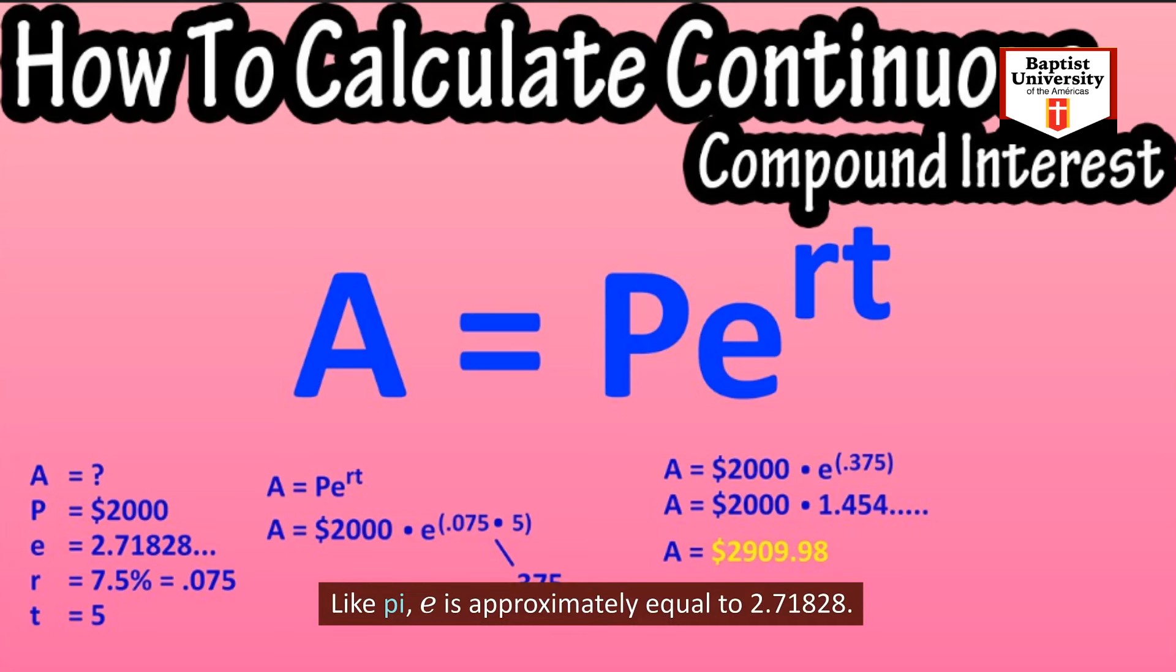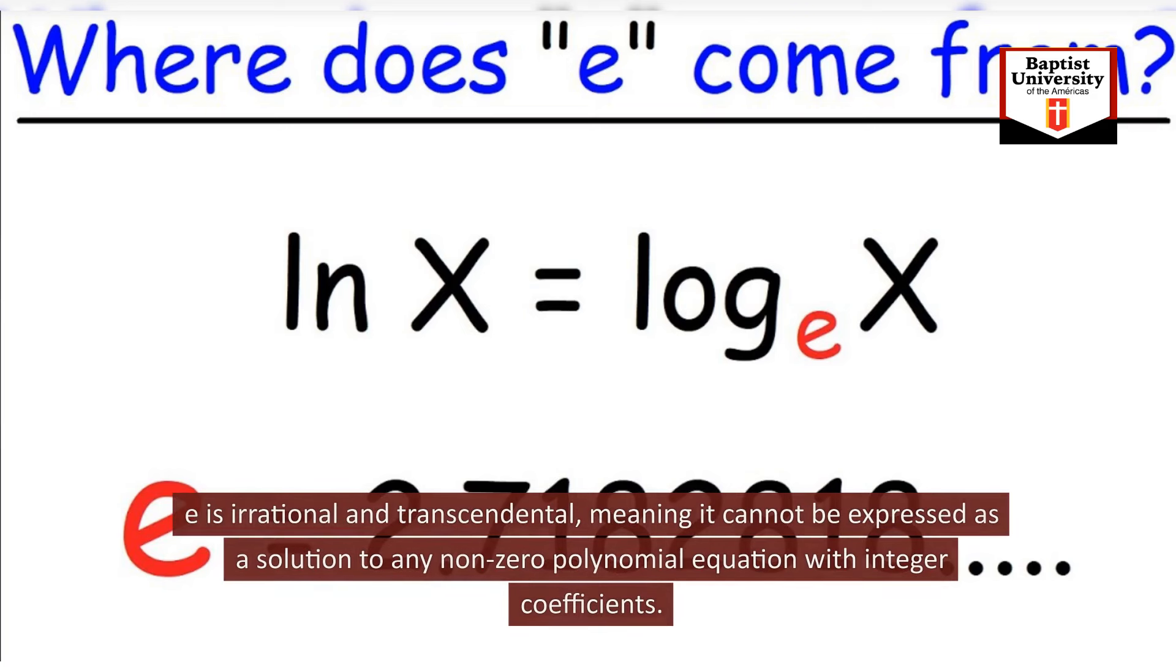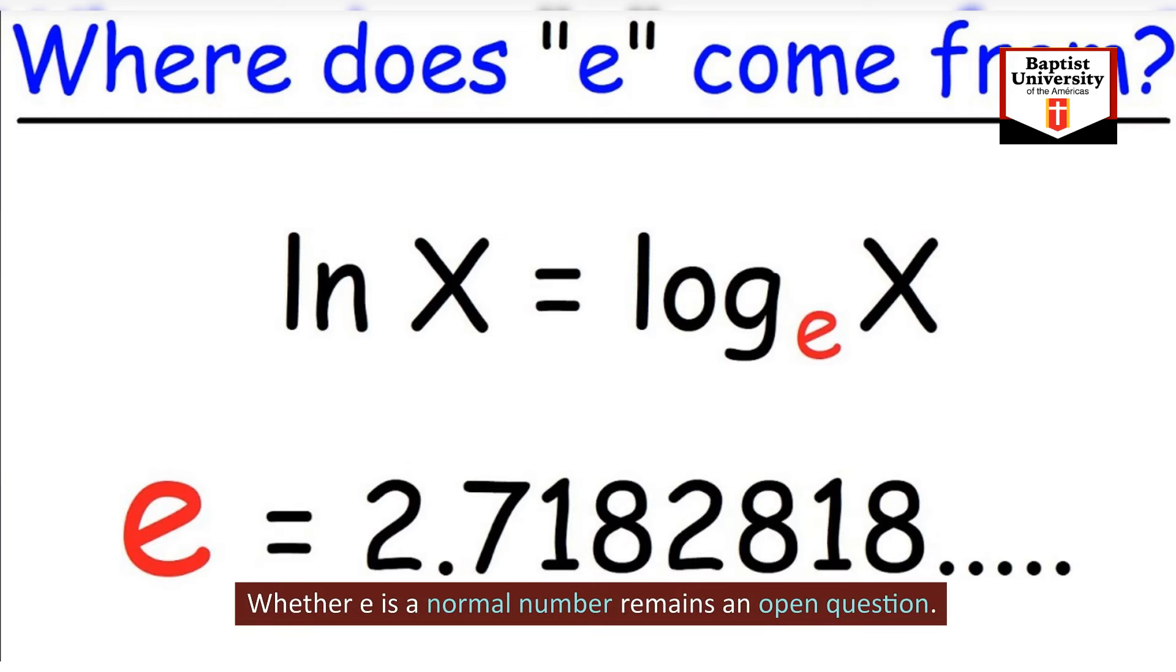Like pi, E is approximately equal to 2.718281828. E is irrational and transcendental, meaning it cannot be expressed as a solution to any non-zero polynomial equation with integer coefficients. Whether E is a normal number remains an open question.